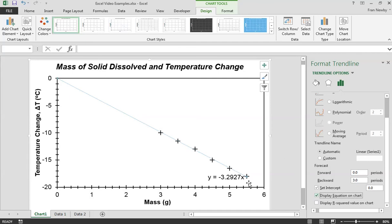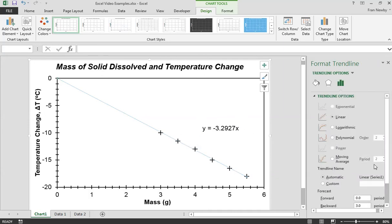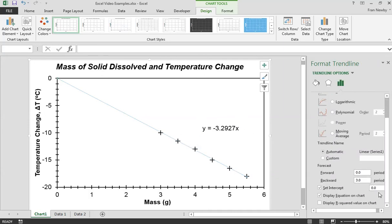The next one is just displaying the equation on the graph, so that has put the equation on. You will have to re-click the trend line if you want to play with it again. Now I'm going to take the set intercept off and you can see that's affected the equation of the graph.